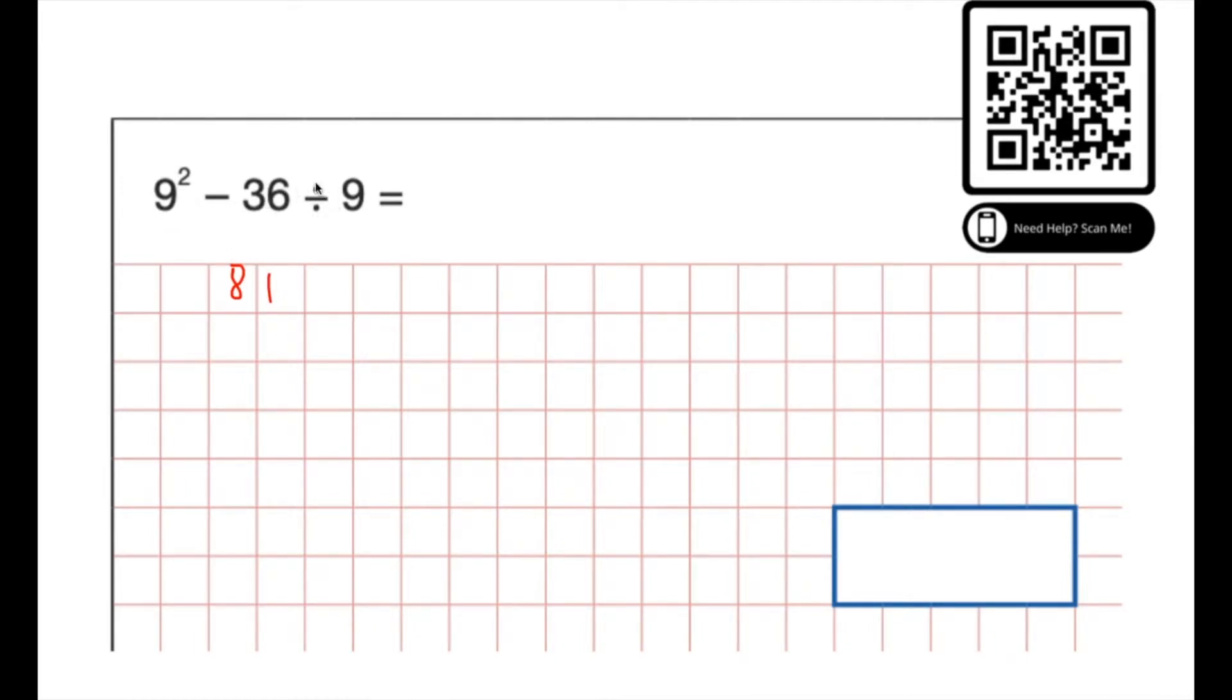Then the next step would be to do this division. So 36 divided by 9, you should know the answer to that is 4. So we've got 81 subtract 36 divided by 9 which is 4. 81 subtract 4 equals 77. So that's our answer. Put it in the box, it's good practice.